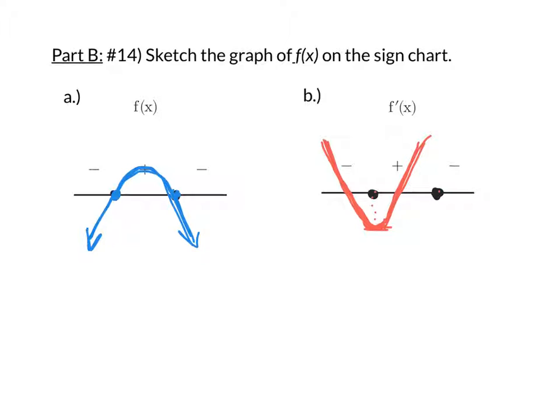Until its derivative is zero. So, at this point, we should have another horizontal tangent line. Then, the derivative becomes negative again. So, the function begins to decrease again. It goes down again.